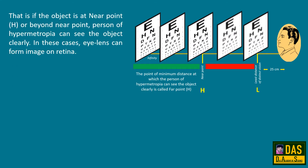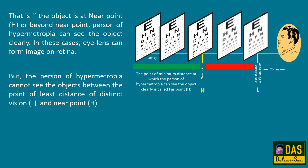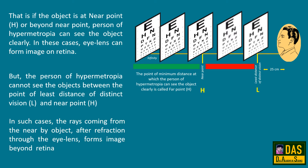If the object is at near point or beyond near point, a person with hypermetropia can see the objects clearly. In these cases, the eye lens can form an image on the retina. But the person with hypermetropia cannot see objects between the point of least distance of distinct vision and near point.